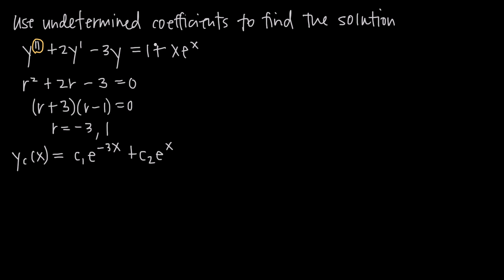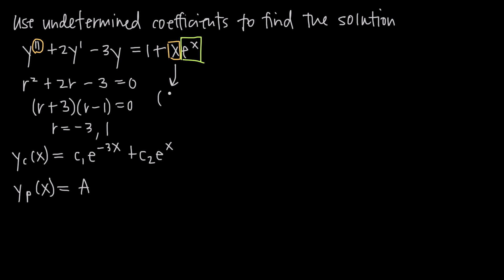To find the particular solution, we want to find a generalized guess that represents the function 1 + xe^x. For the constant 1, we replace it with a constant which we call a. The xe^x term is more complicated — we have two functions multiplied together. For just the x part, our guess would normally be ax + b, but since we've already used a, we'll say bx + c.